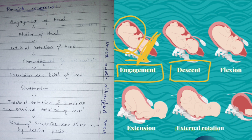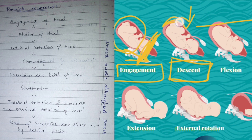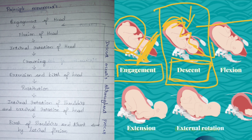Next is descent. Descent is specifically mentioned here because it is actually the process seen throughout the whole of labor. Descent is the contraction and relaxation of the uterine muscle that makes the baby move and come out. That motion is known as descent, and in every step of labor we can see it. It is specifically mentioned here because this is where the descent begins.